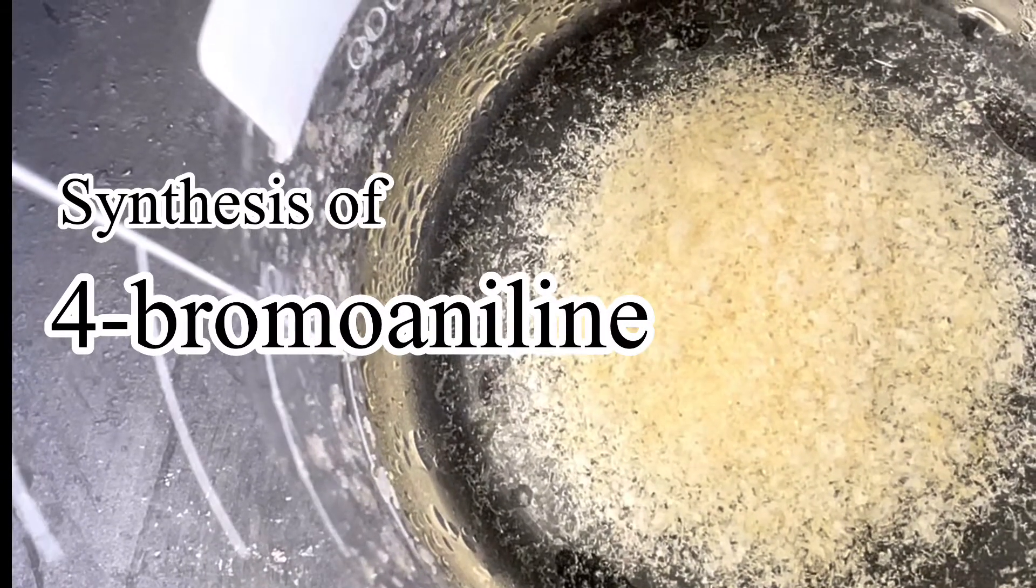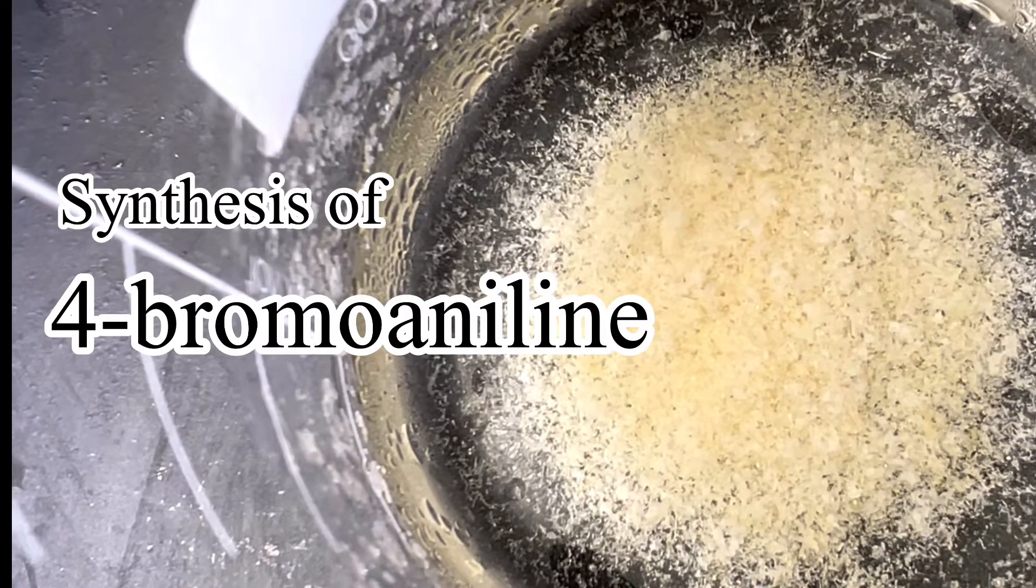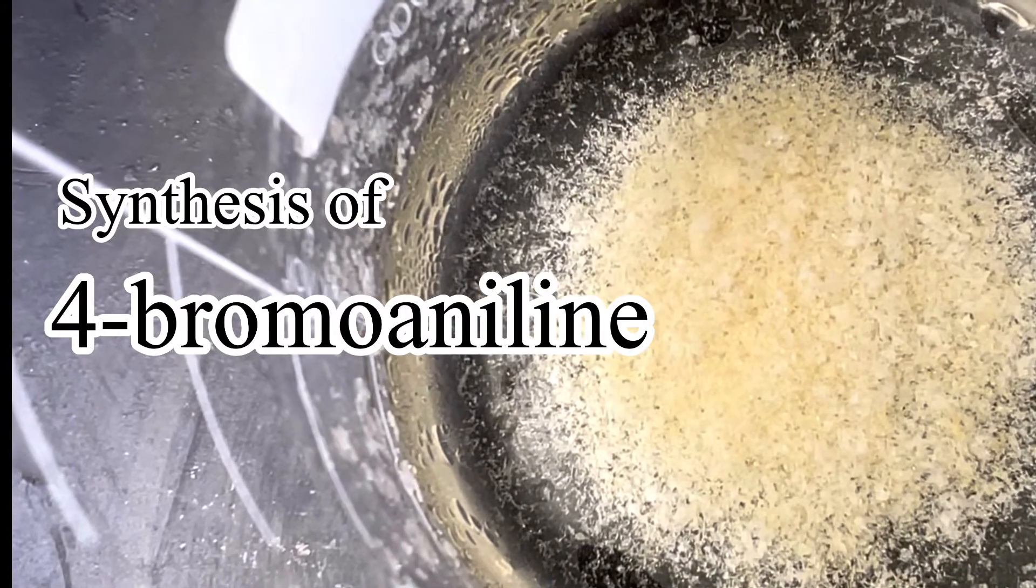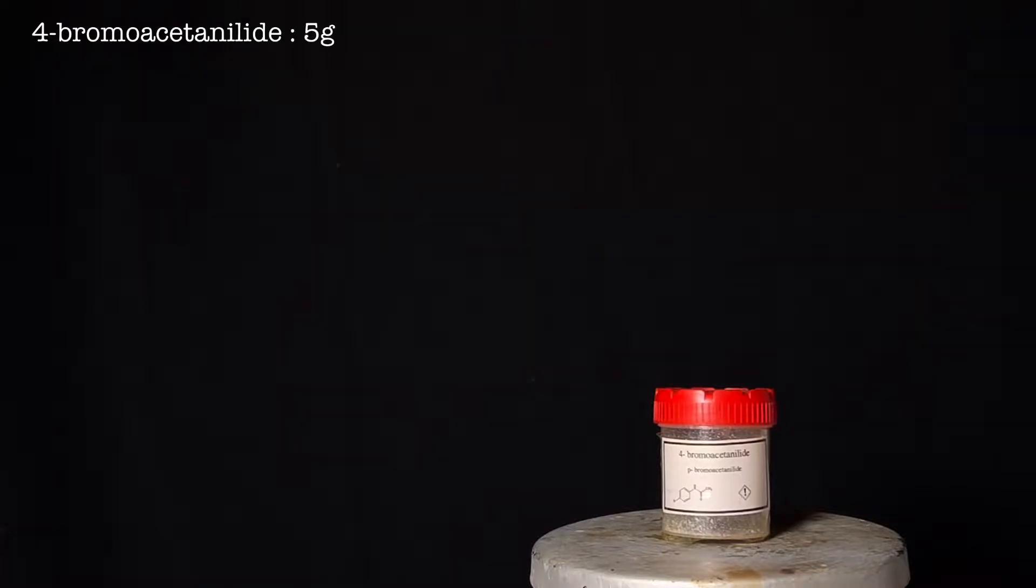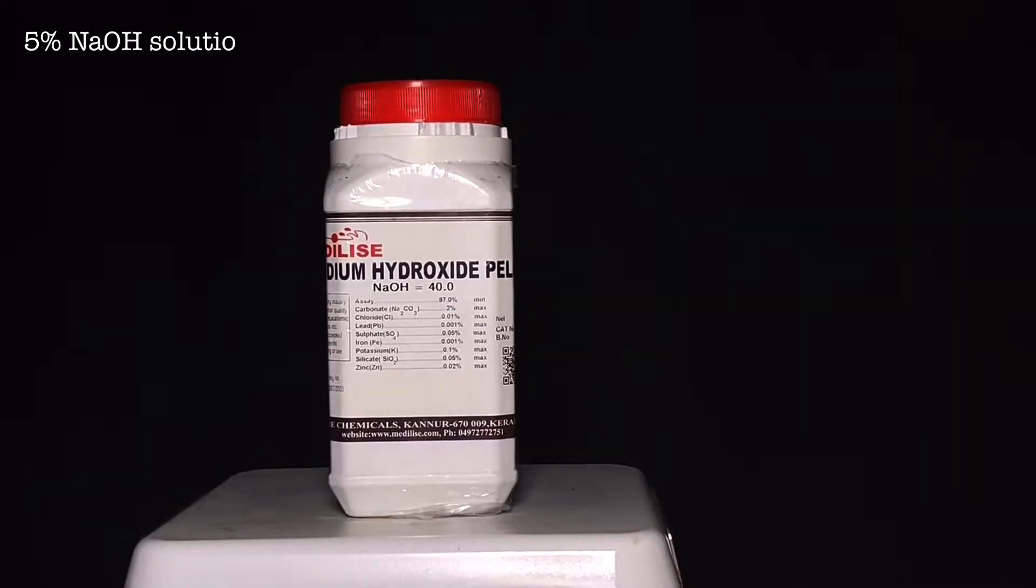Hello friends, in this video we will synthesize parabromoaniline from parabromoacetanilide by acidic hydrolysis. For this synthesis we will need 5 grams of parabromoacetanilide, 5 milliliters of 37 percent hydrochloric acid, and 200 milliliters of 5 percent sodium hydroxide solution.